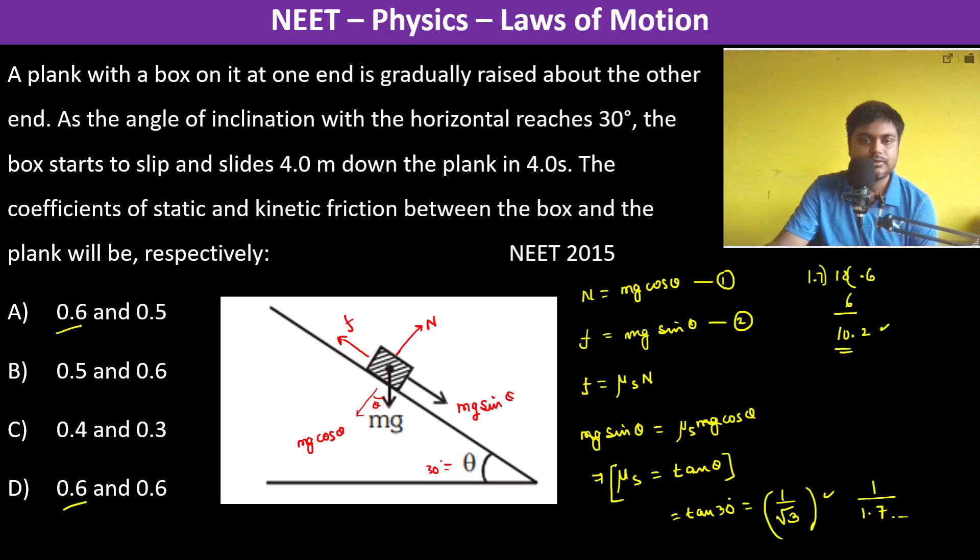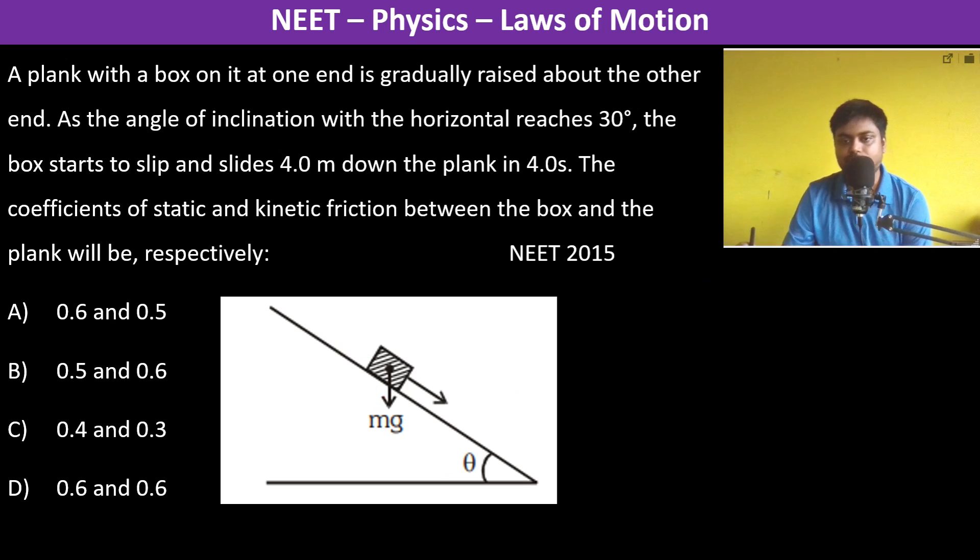Now we have it's sliding down 4 meters down the plank in 4 seconds. So therefore we have s is equal to 4 meters, time taken is 4 seconds, initial velocity is 0. Now what is acceleration? Once it starts sliding, there is coefficient of kinetic friction which is going to act.